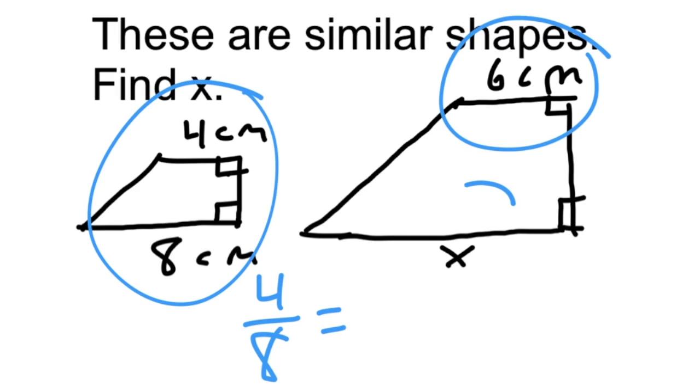The ratio for this one is going to be the short base is six, the long base is X. Make sure everything matches up. Now that you have your proportion you can cross multiply and solve for what X is equal to.